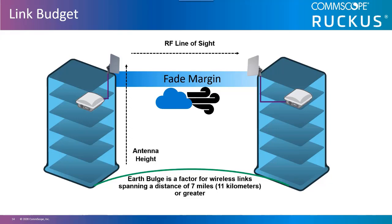Once the link is installed in the environment, you can determine the actual margin for the link, called the system operating margin. The fade margin is a planned margin for the link, while the system operating margin is the actual margin.